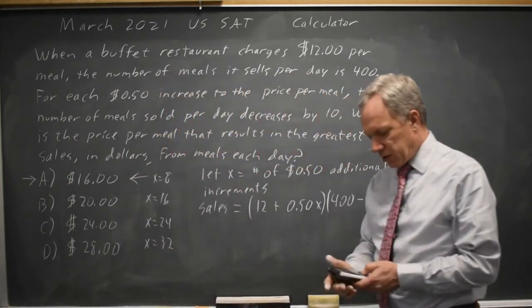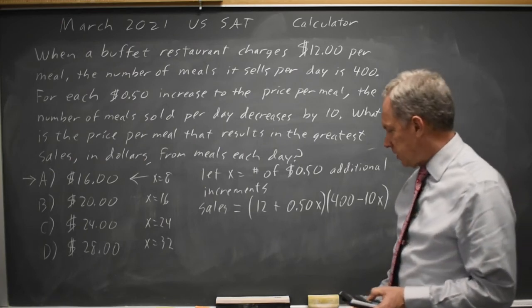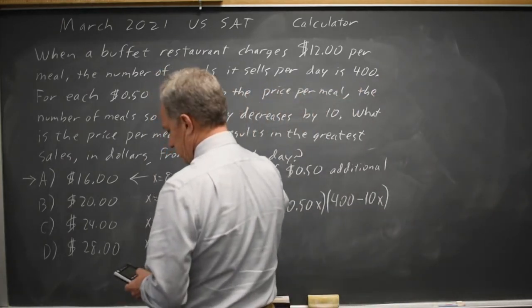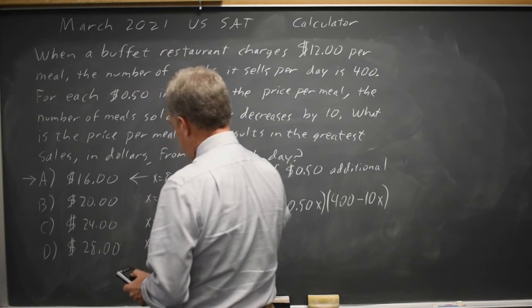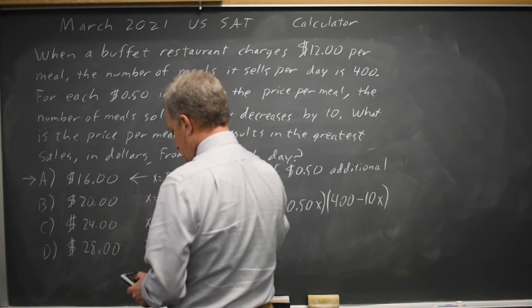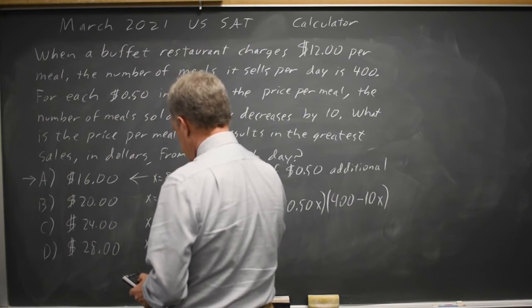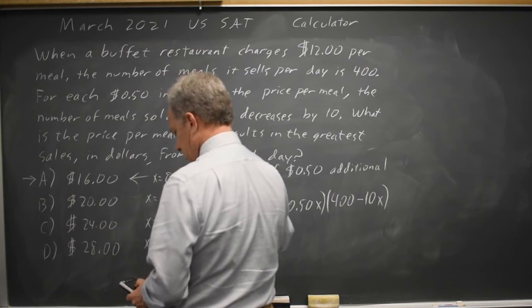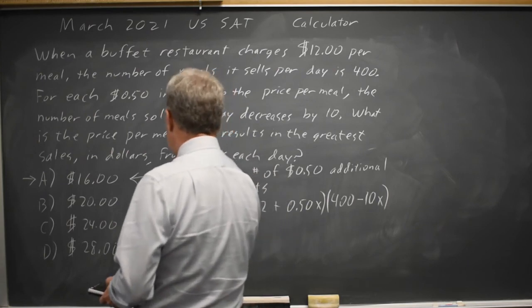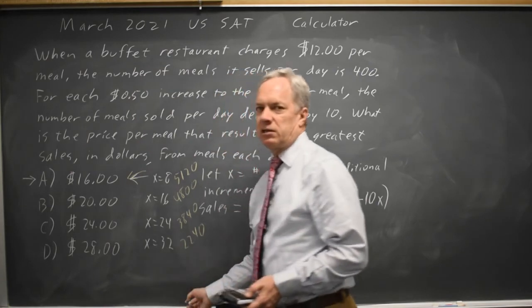On my graphing calculator, those give me $5120, $4800, $3840, and $2240, where again the largest sales is Choice A.